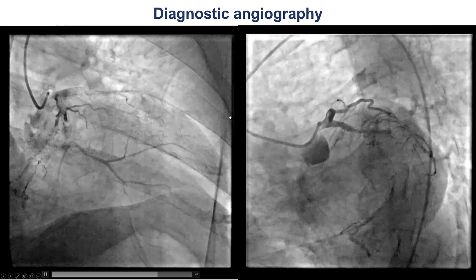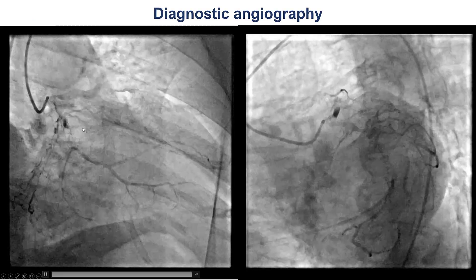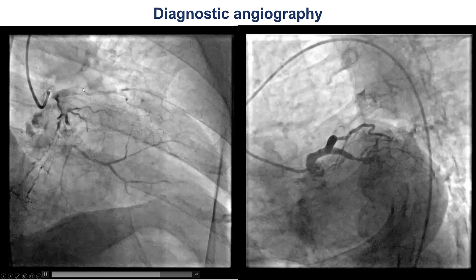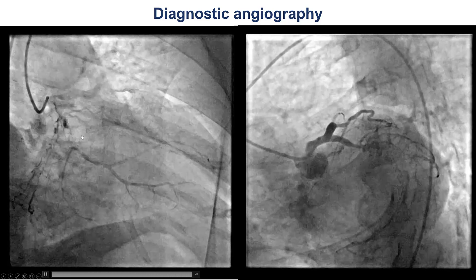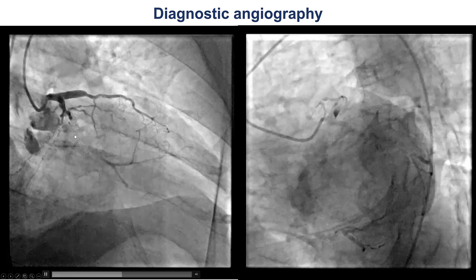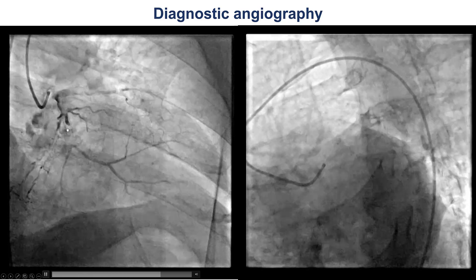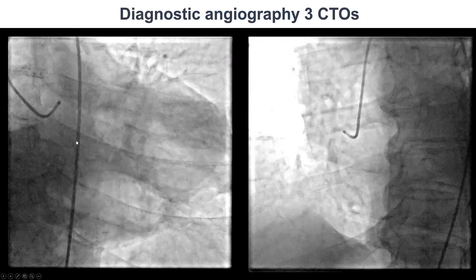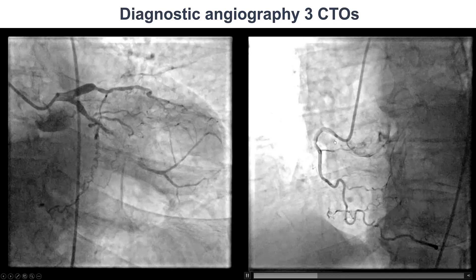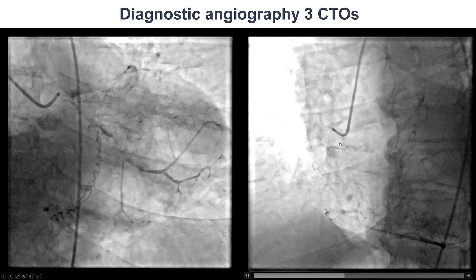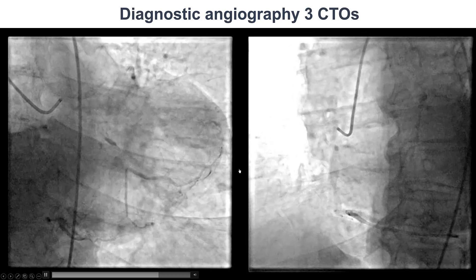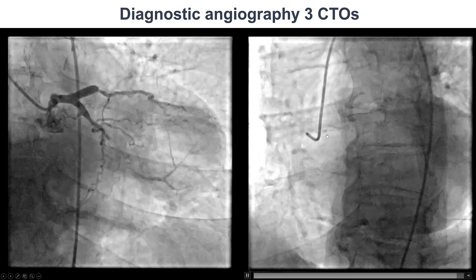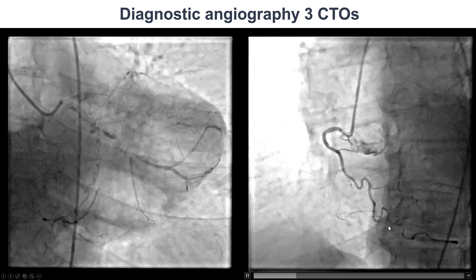Diagnostic angiography demonstrated essentially three CTOs. There is a CTO of the mid LAD, a CTO of the circumflex — actually the first obtuse marginal branch — and there is also a CTO at the ostium of the right coronary artery, with the distal vessel filling mainly via a conus branch.